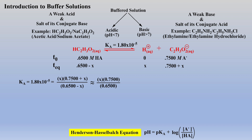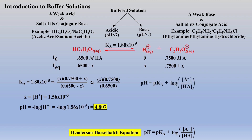To demonstrate just how useful and convenient this equation is, let's compare problem-solving strategies. As previously demonstrated, the pH of this solution can be determined in the usual manner, solving for x, the proton concentration, and taking the negative log of the proton concentration. Now let's calculate the pH employing the Henderson-Hasselbalch equation. Simply placing the given Ka value and initial concentrations of conjugate base and weak acid into the equation affords the same pH answer with much less work.